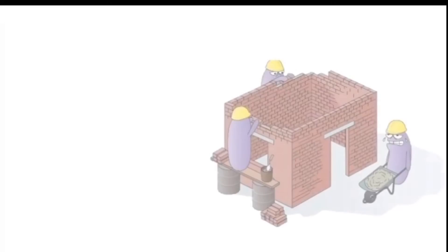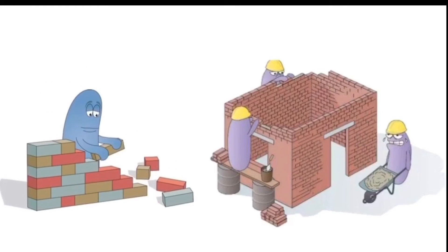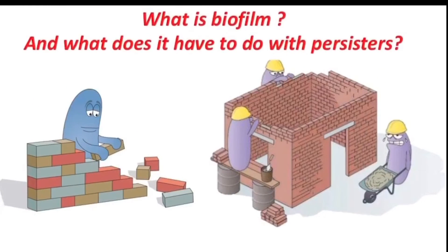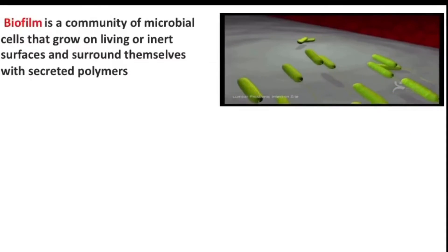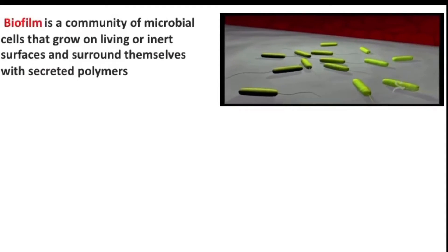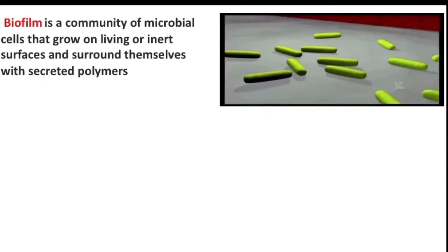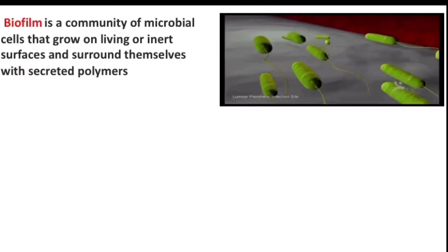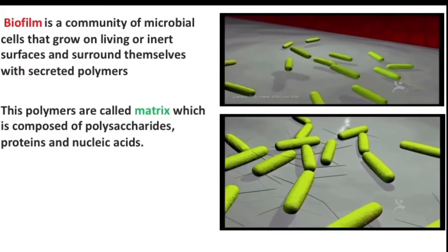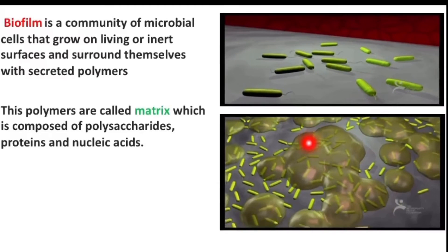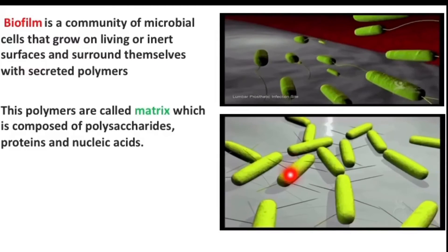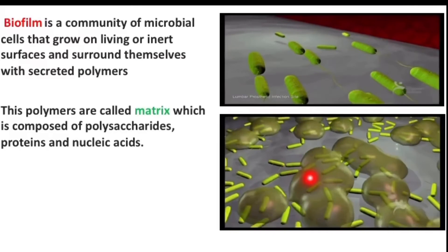Hi, I am Rashad Fuad. Since the beginning of our seminar, we've been talking about biofilms and persisters within biofilms. So, what is a biofilm, and what does it have to do with persister cells? Biofilm is a community of microbial cells that grow on living or even inert surfaces, and surround themselves with secreted polymers called the matrix, which is composed of polysaccharides, proteins, and nucleic acids, holding them all together.